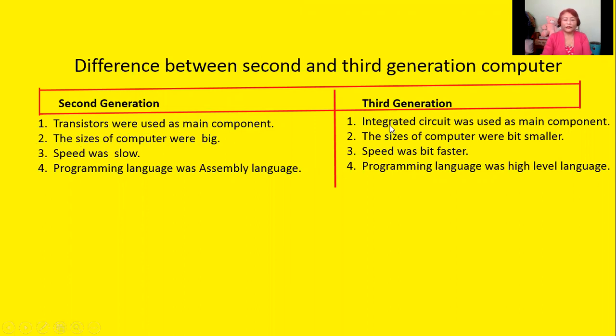Third generation computers used IC — integrated circuit — as the main component. So integrated circuit was used as the main component in third generation computers.